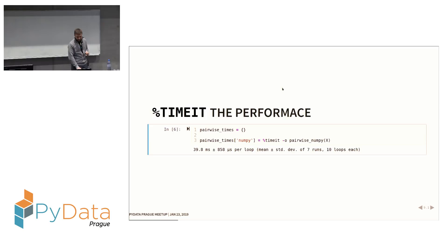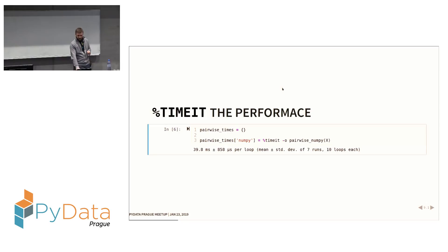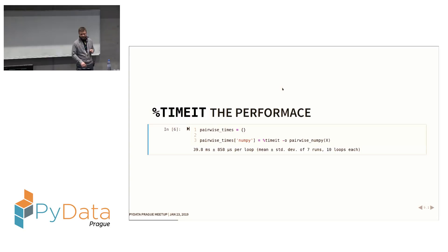I'm using %timeit, an IPython magic, to get statistics about runtime — it runs the command multiple times and gives statistics. I'm storing results in a dictionary to compare times later. We're at 40 milliseconds for this case. These results were run before the presentation on my laptop, which is not the newest. On a server or modern desktop you'd get lower numbers, and the ordering of approaches can vary.